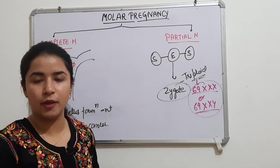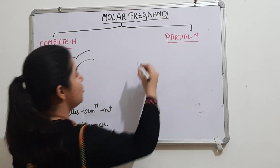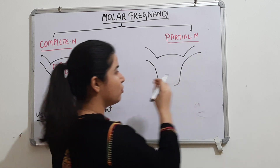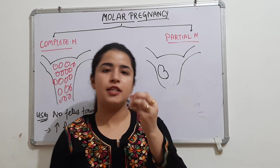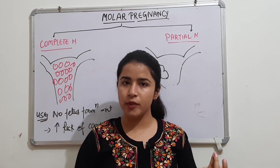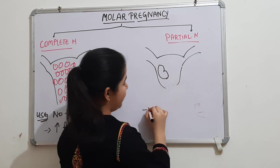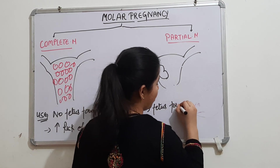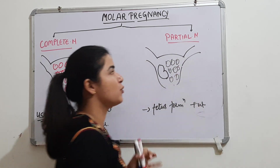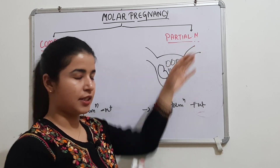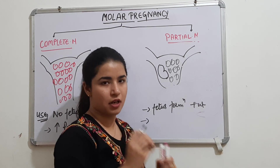On ultrasound in a partial mole, you will see both fetal tissue and molar tissue. Because the egg is normal and fertilized by two sperms, fetus formation is present, though the zygote is triploid. You will see both the fetus and molar vesicles — that is why it is called a partial molar pregnancy.